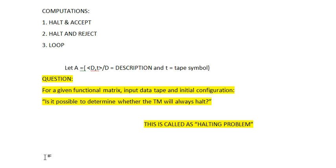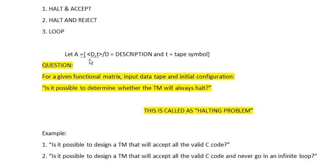Now let me give you an example. You are all aware of C programming code. If I ask you: is it possible to design a Turing machine that will accept all valid C code? The answer is yes — it is possible to design a Turing machine that accepts all valid C code. But if I ask: is it possible to design a Turing machine that will always accept all valid C code and never go into an infinite loop? That answer is not always yes.